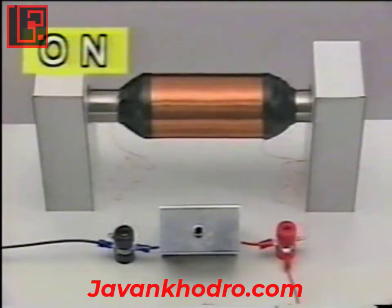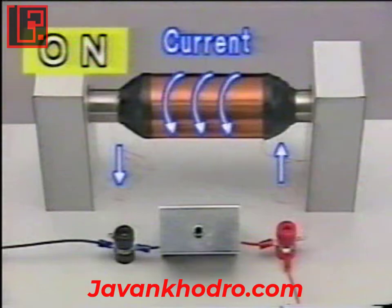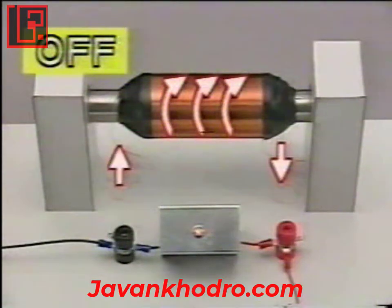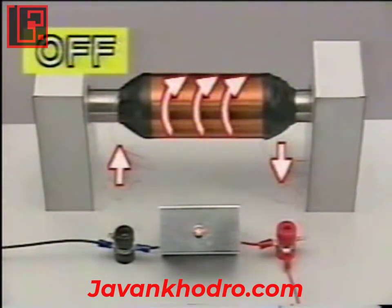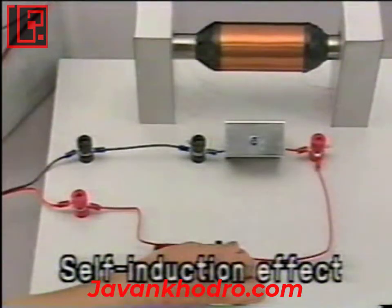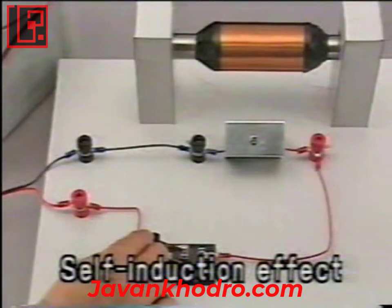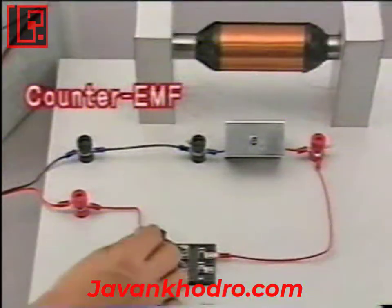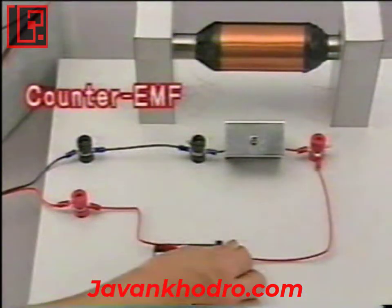Here's why. If the switch is turned off when current is still flowing in the coil, a large electromotive force, EMF, or voltage, is generated, flowing in the opposite direction. This is called the self-induction effect, and the electromotive force generated is called the counter-electromotive force.